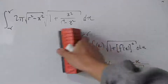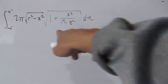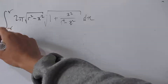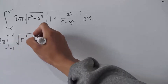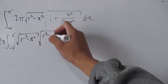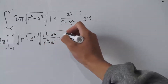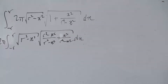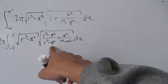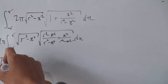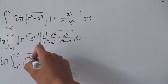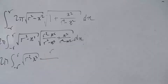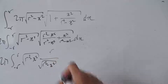Now we solve the integral. We put everything on a common denominator: the integral from negative r to r of 2π times the square root of r squared minus x squared, times the square root of r squared minus x squared over r squared minus x squared plus x squared over r squared minus x squared, dx. The terms in the numerator combine to give r squared over that denominator.